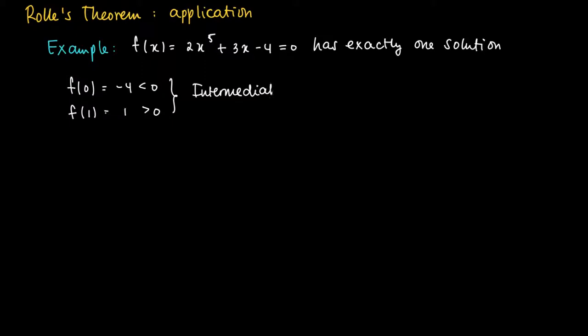So by the intermediate value theorem we may conclude that since f is continuous that there is a c in the open interval (0, 1) for which the graph should cross the x-axis, or it means the same as f(c) being equal to 0.